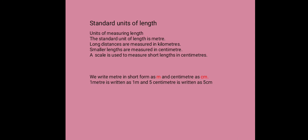Smaller lengths are measured in centimeters. For example, the length of a book can be measured in centimeters. A scale is used to measure short lengths in centimeters. We write meter in short form as 'm' and centimeter as 'cm'. So 1 meter is written as 1 m, and 5 centimeters is written as 5 cm.